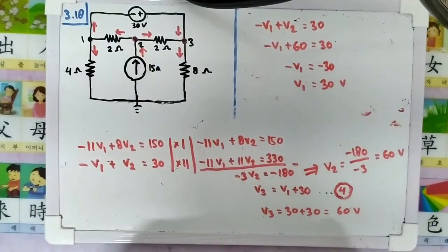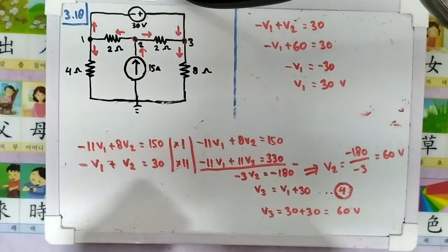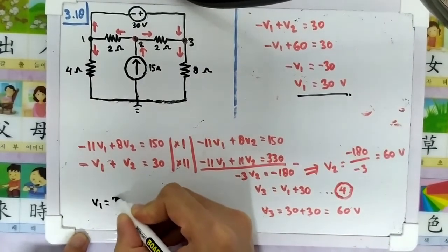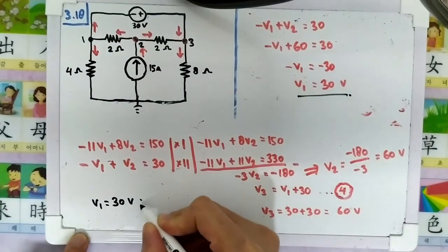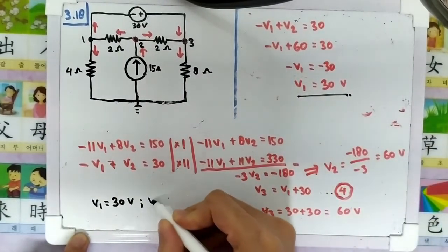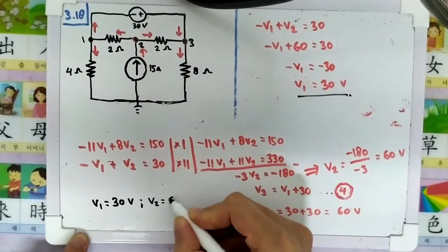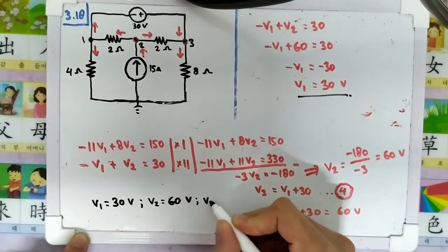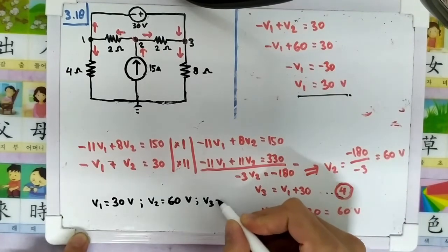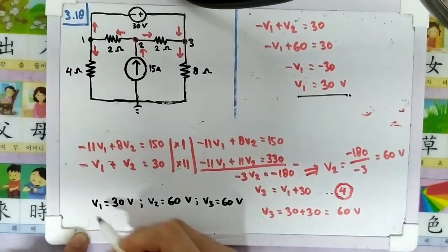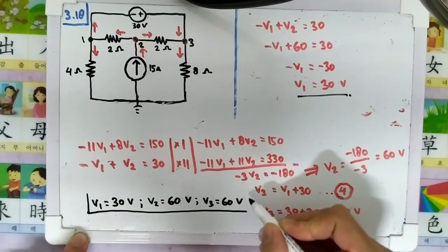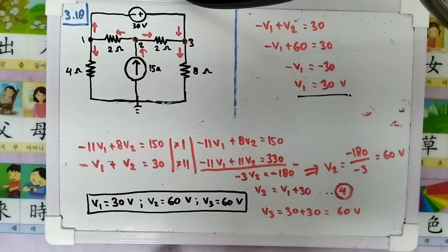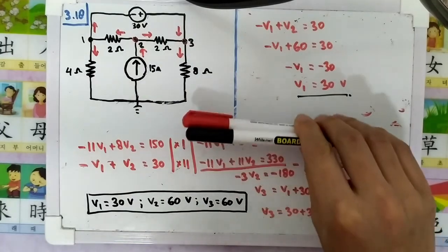In conclusion, the node voltages are: V1 = 30 volts, V2 = 60 volts, and V3 = 60 volts. That's our final answer. Let me know if you find any mistakes, and thanks for watching.